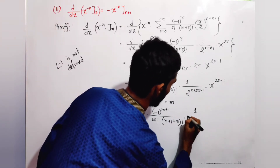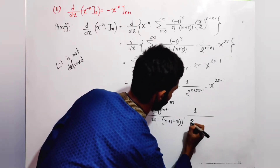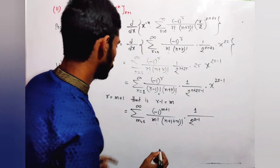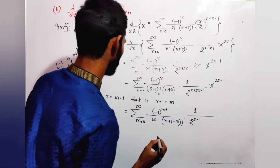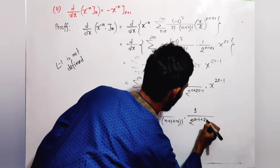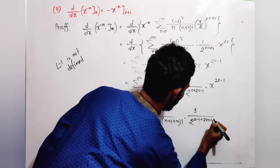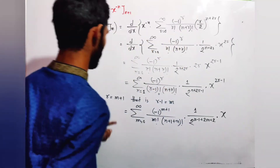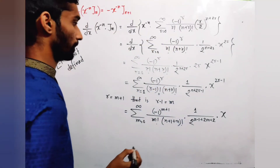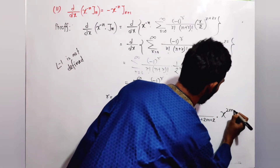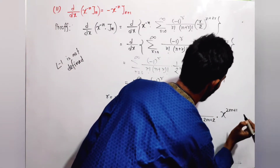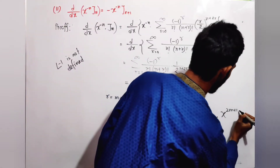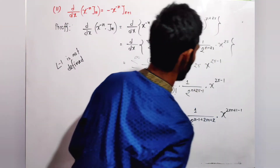Continuing the substitution with r - 1 = m: the power (1/2)^(n+2r) becomes (1/2)^(n-1+2m+2) = (1/2)^(n+1+2m), and x^(2r-1) becomes x^(2m+1). So the series becomes the sum over m from 0 to infinity of [(-1)^m / (m! · (n+1+m)!)] · (1/2)^(n+1+2m) · x^(2m+1).